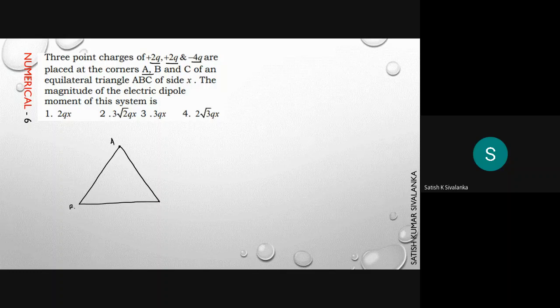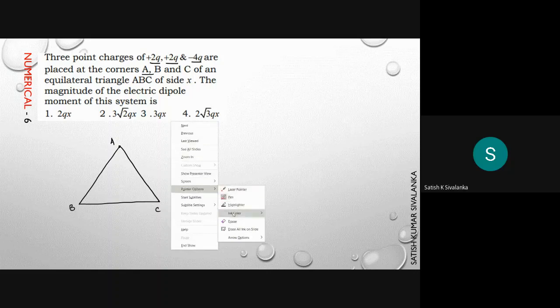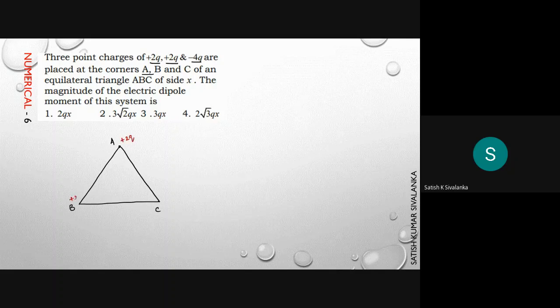A here, let us say B here and C here. The charges are given to you as +2q, +2q, and -4q.